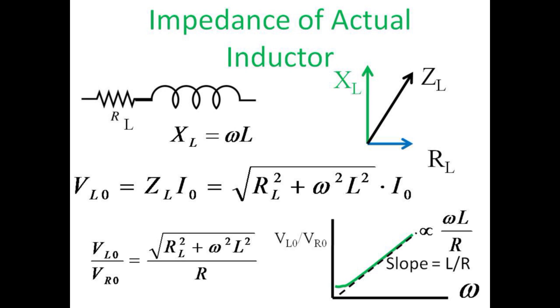Although the function representing the ratio of V_L over V_R looks complicated because of the presence of R_L, we note that at high frequencies, R_L becomes irrelevant, and the inductor voltage becomes proportional to the frequency with a slope of L over R. This is the time constant for the inductor.